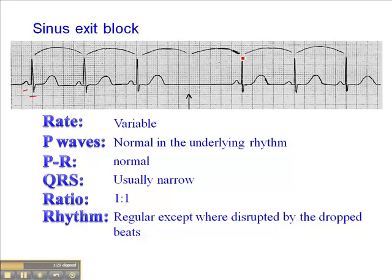In sinus arrest or sinus pause, which I talked about in the last presentation, we don't see this. What we see in sinus arrest is typically at least two beats dropped, and the next beat is an escape beat. The P wave morphology is different, and the QRS falls out of sequence from the others. So sinus exit block is quite rare, and not generally as serious as a sinus arrest or sinus pause. But the mechanism is different, and that makes it kind of interesting.